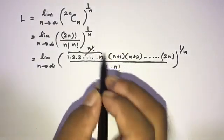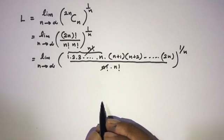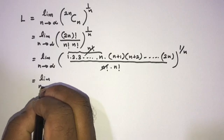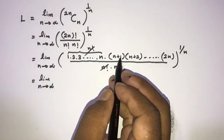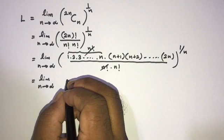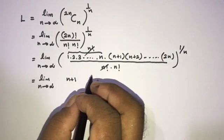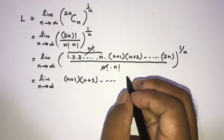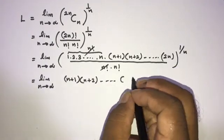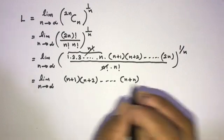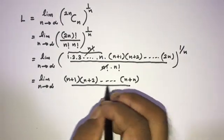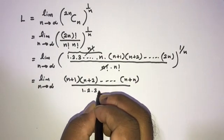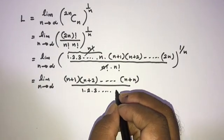Now this n factorial and this n factorial get cancelled. We can now write the limit as n approaches infinity of n plus 1 times n plus 2 going up to 2n, where we know n factorial can be written as 1 times 2 times 3 with last term n.